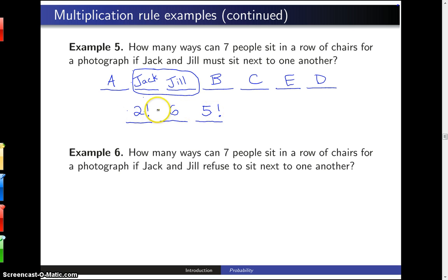Those are the three decisions that need to be made when you're lining these people up so that Jack and Jill are adjacent. And I worked that out earlier, that is one thousand four hundred and forty different ways to seat seven people in a row of chairs so that Jack and Jill are adjacent.